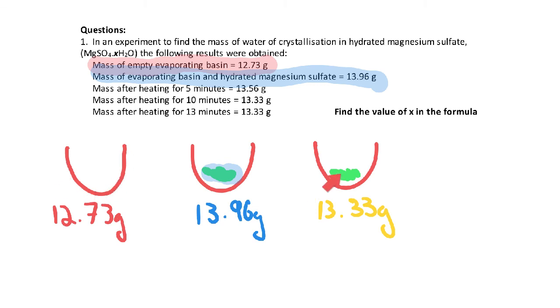So the mass of my magnesium sulfate would be 13.33 minus 12.73. The other mass that I need is the mass of just my water. If I want just my water, I have to take away the mass of the magnesium sulfate and the mass of my evaporating basin. I have both these values here, so there's my magnesium sulfate and my evaporating basin. So if I want just the mass of my water, I'll do 13.96 minus 13.33.